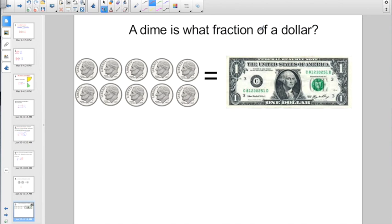Check out the next one. A dime is what fraction of a dollar? Well, the denominator is always the total number of pieces. How many total dimes equal one dollar? That answer should be 10. Again, to find my numerator, I'm talking about a dime. So a dime is one tenth of a dollar.